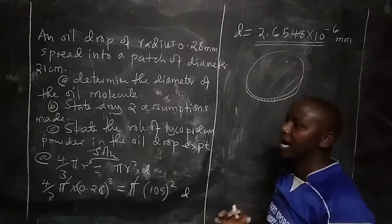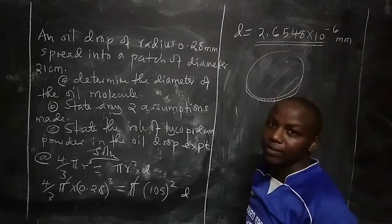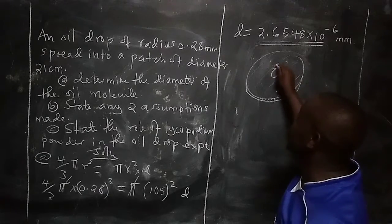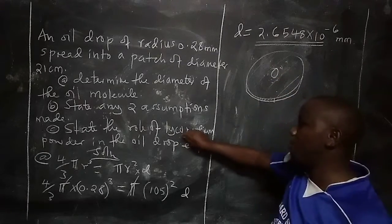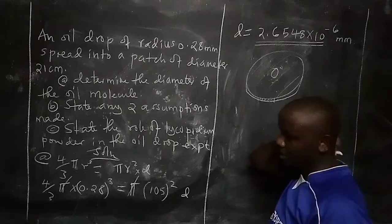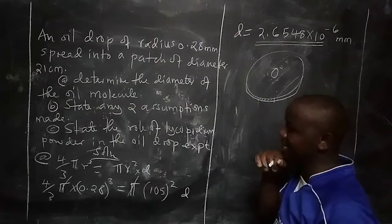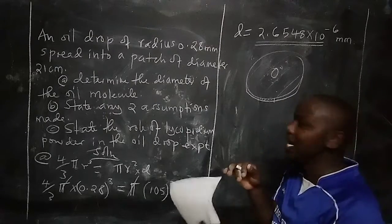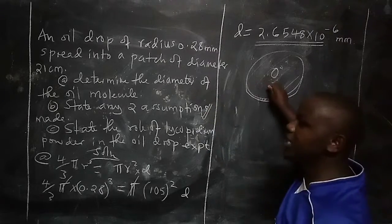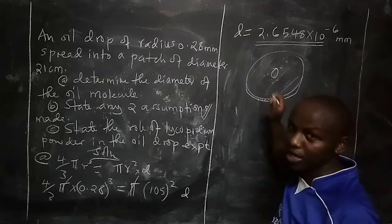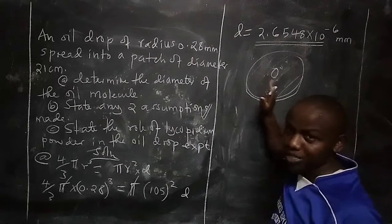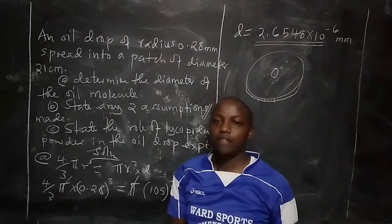Finally, Part C: the role of lycopodium powder in the oil drop experiment. First, it is used to measure the extent of spreading of the oil drop — once the oil drop spreads, we examine how the lycopodium powder is displaced to determine the area into which the oil has spread. Second, it helps break the surface tension of the oil so that the oil can spread until it is one molecule thick. We also assume the oil cannot spread beyond one molecule thickness — a molecule cannot break to continue spreading.